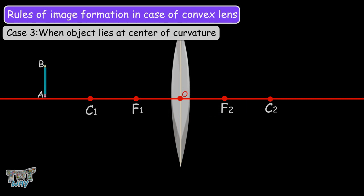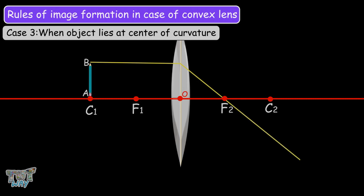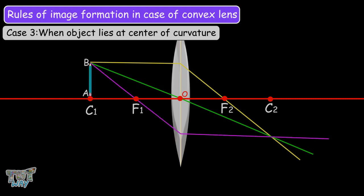When the object is placed at C1, the ray parallel to the principal axis refracts and passes through F2. The ray through the optical center emerges without deviation. The ray through F1 refracts and becomes parallel to the principal axis. These three rays meet at point B'. Drawing a perpendicular from B' to the principal axis gives point A', and this image is called A'B'.